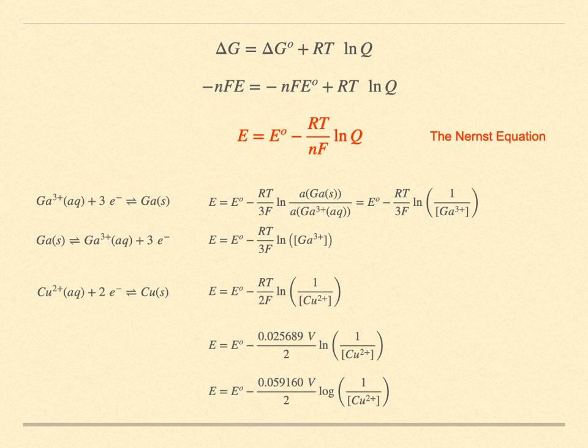The cell potential changes by 59.16 millivolts over N for every factor of 10 change in concentration. For the copper case, with two electrons, that would be 29.58 millivolts per decade. But for gallium, with three, it would be 19.72 millivolts per decade change in concentration.